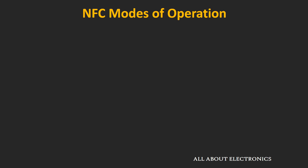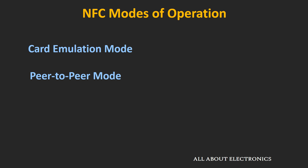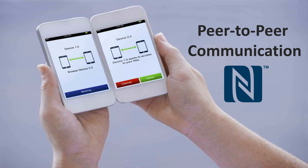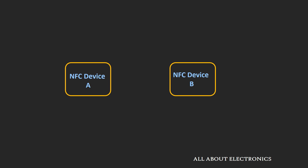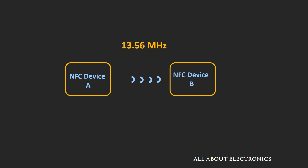NFC supports three modes of communication: card emulation mode, peer-to-peer communication mode, and reader or writer mode. In peer-to-peer mode — for example, sharing information between two smartphones — both devices are active and communicate by generating radio waves alternatively. When one device transmits data, the second device only listens and does not generate its own radio waves. Both devices generate radio waves alternatively at the carrier frequency of 13.56 MHz, allowing them to share information and files.